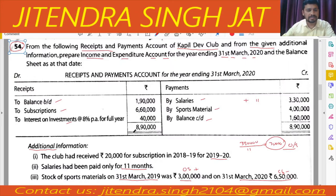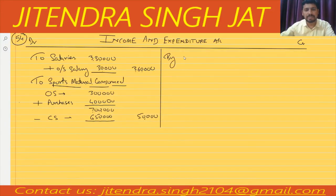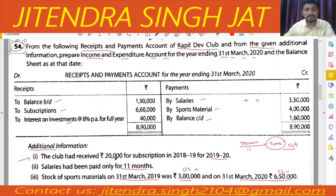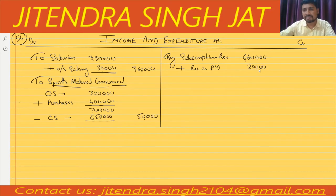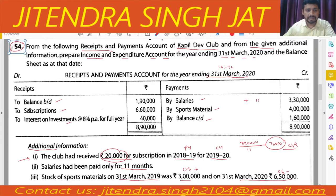On the income side, subscription is given as 6,60,000. Now pay attention: the club had received 20,000 for subscription in 2018-19 for 2019-20. This means we received 20,000 in the previous year but it belongs to the current year, so it must be added. Therefore, 6,60,000 plus 20,000 equals 6,80,000 subscription to be recorded on the credit side.